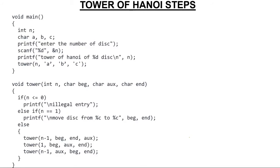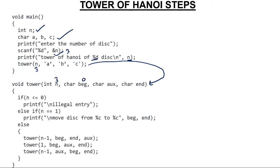Now the question is how to solve this using a C program. In the main function, we have taken one integer variable and three character variables. The integer variable is for the number of disks, and the three character variables are for the pole names: A, B, and C. We ask the user how many disks they want to solve. Suppose the user enters three disks — n has value 3. We then call the function tower(3, A, B, C), which jumps to its definition where n=3, beginning=A, auxiliary=B, and end=C.